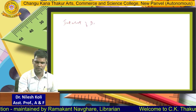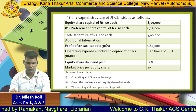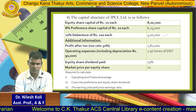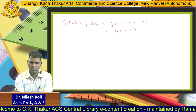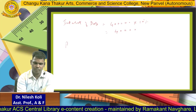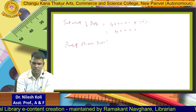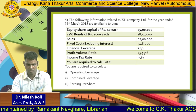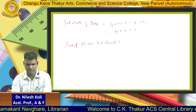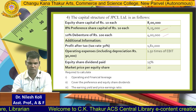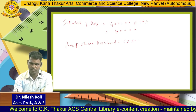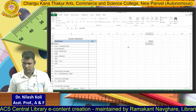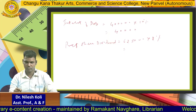First we calculate interest on debentures: debenture nominal value = 4 lakh, rate = 10%, so interest on debentures = 4,00,000 into 10% = 40,000. Next, preference share dividend: nominal value = 6,25,000, rate = 8%, so preference share dividend = 6,25,000 into 8% = 50,000.